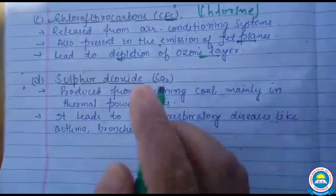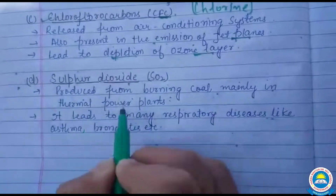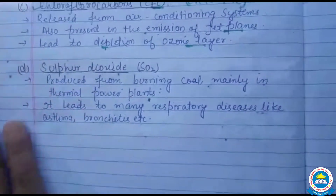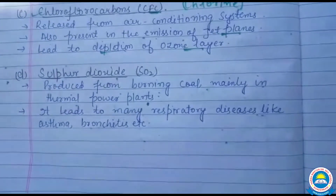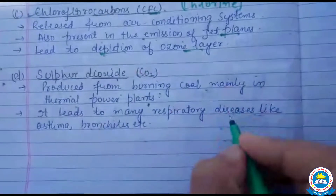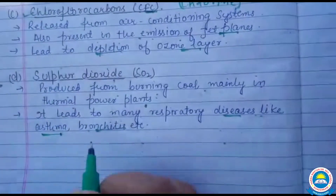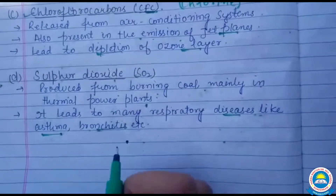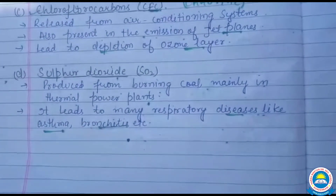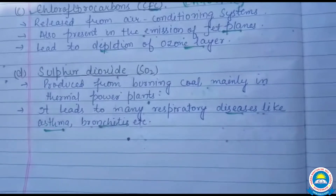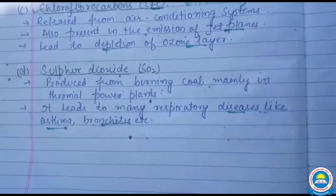Sulfur dioxide produced होती है from burning coal mainly in thermal power plants। इसके effects में leads to many respiratory diseases like asthma and bronchitis — mostly respiration की problems। यह plants के लिए भी harmful है — chlorosis करता है जिसमें leaf का green color धीरे-धीरे yellow होना शुरू हो जाता है और plant की death भी हो जाती है।